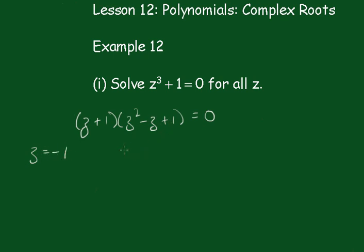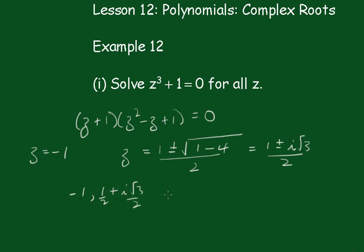To solve this one, we'll use the quadratic formula, and we'll say that z is equal to 1 plus or minus square root of 1 minus 4, all over 2, which becomes 1 plus or minus i root 3 all over 2. So the three roots are minus 1, 1 plus 1 on 2 plus i root 3 on 2, and 1 on 2 minus i root 3 on 2.